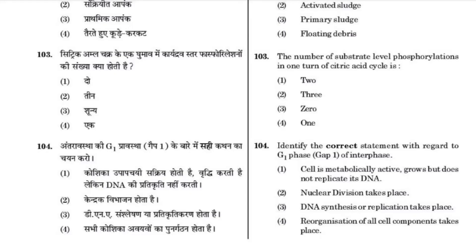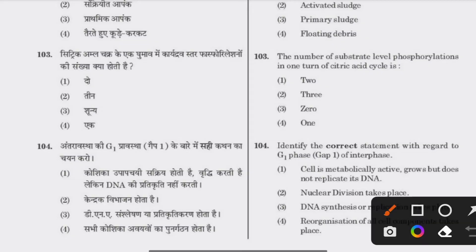The number of substrate-level phosphorylations in one turn of the citric acid cycle is 4. The answer is 1.